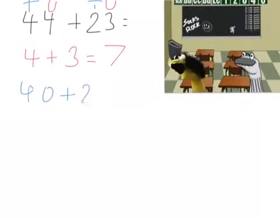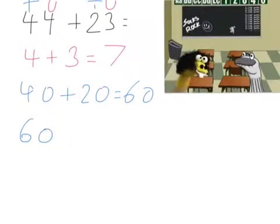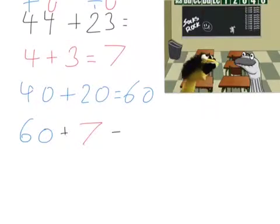And then finally, we put the units and the tens back together. So sixty add seven gives us sixty-seven.